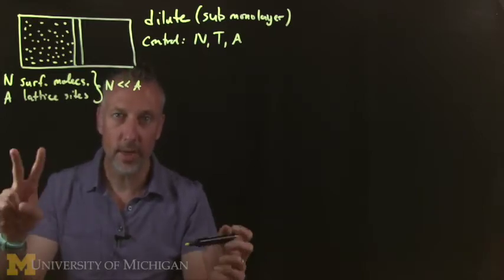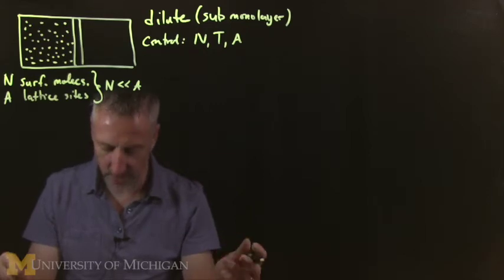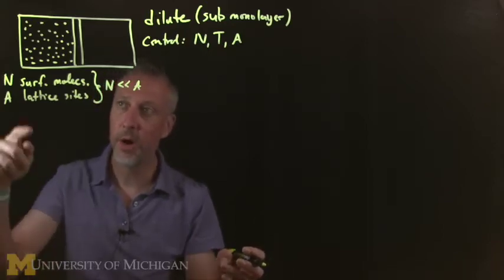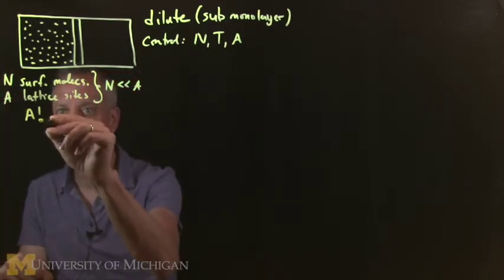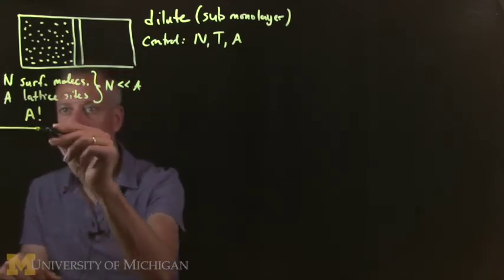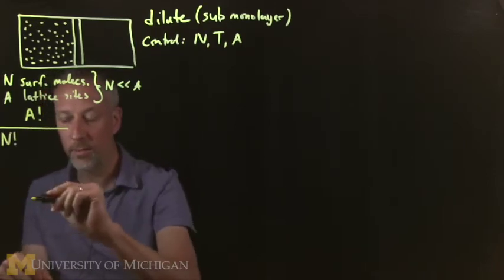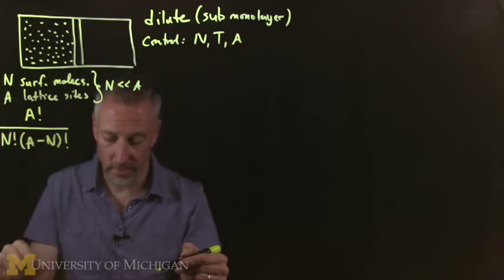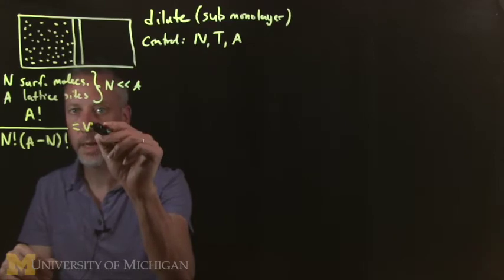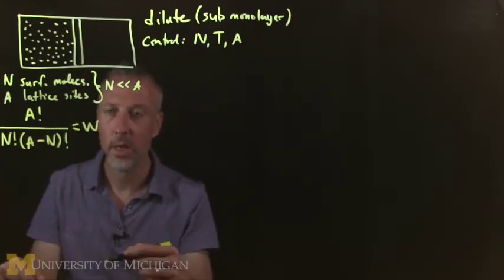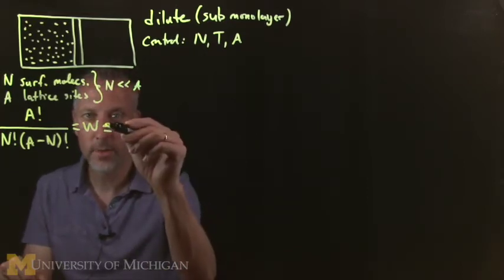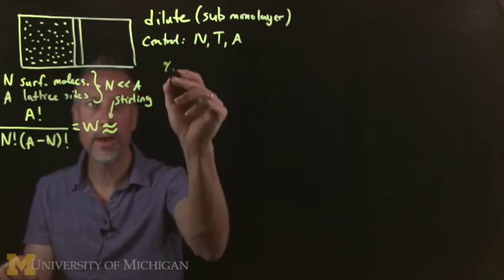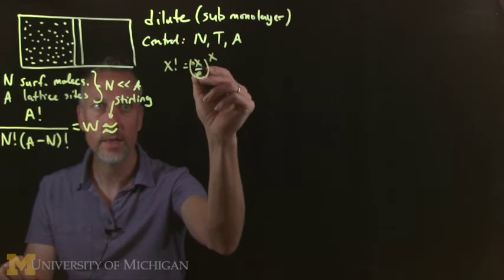So how do we do the lattice site calculation? There are two ways. I'm going to explain the harder way first and then the easier way after. The harder way is the most correct way. If you have N molecules in A sites, then we know there are A factorial permutations of all the A sites, divided by N factorial for the molecules on the N sites and then all the remaining ones. This W is what we need to take the natural log of.